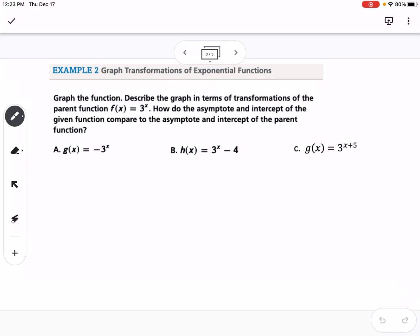Okay, example 2 says to graph - we're not going to graph on these, we're just going to describe - I mean, it might sketch a graph - how the graph, in terms of transformations of the parent function, f of x equals 3 to the x. So if we have rough sketch, that's what 3 to the x is going to look like. And it says, how did the asymptote and the intercept of the given function compare to the asymptote and intercept of the parent function?